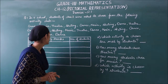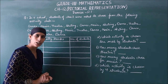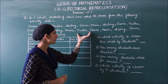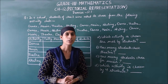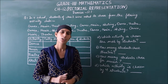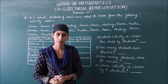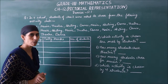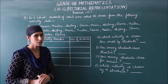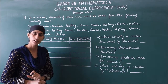We have to make a tally chart. We have to make tally marks showing how many students chose dance, how many chose music, how many chose theater, and how many chose skating.